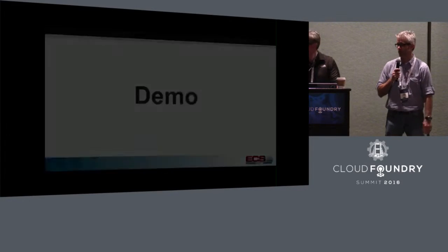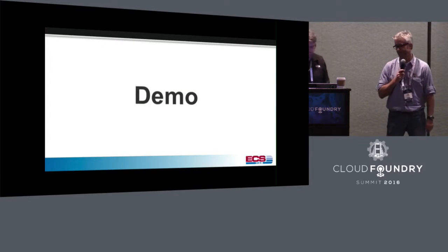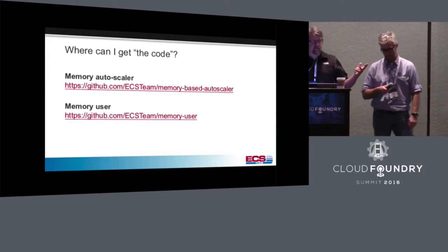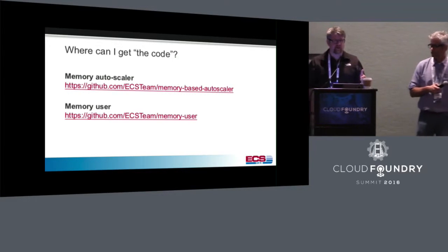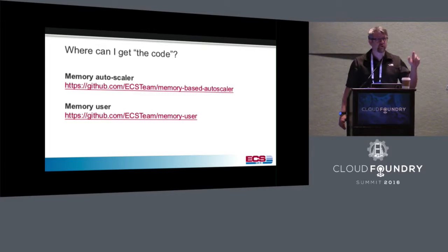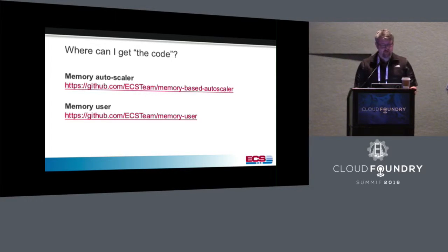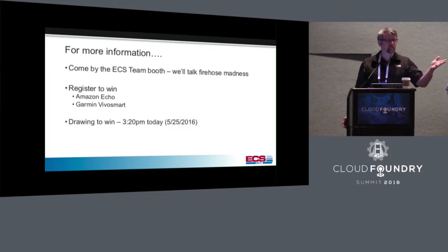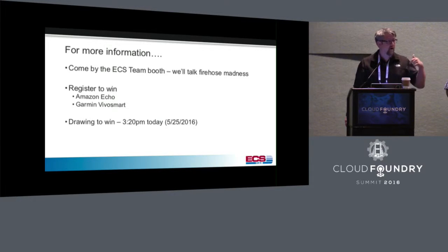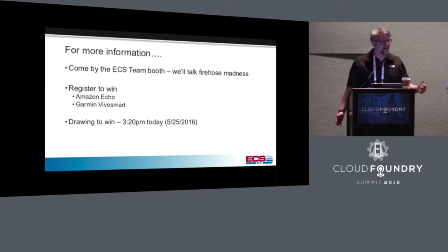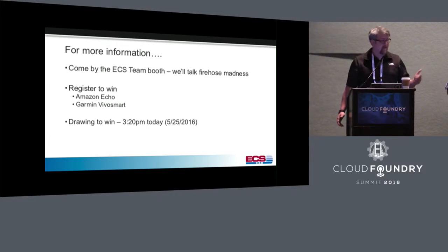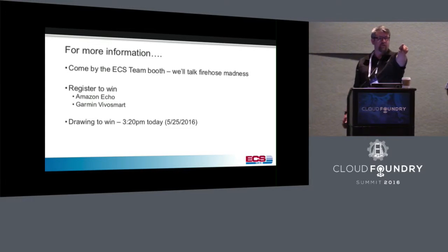That's a simple prototype, but you could tune many more dials — composition patterns looking at HTTP response times, memory, and CPU together for complex scaling algorithms. The code is available on ECS Team's GitHub. We've also uploaded this presentation. Come by the booth this afternoon for more Firehose discussion, and you can register to win an Amazon Echo or Garmin VivoSmart — drawing is at 3:20 today.